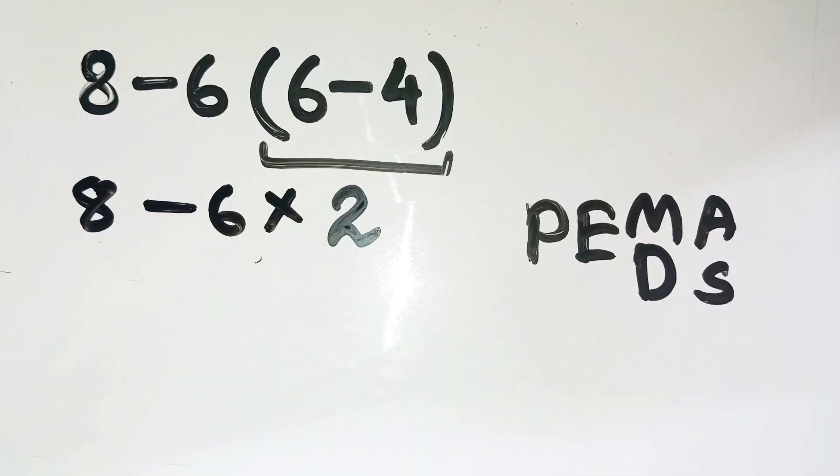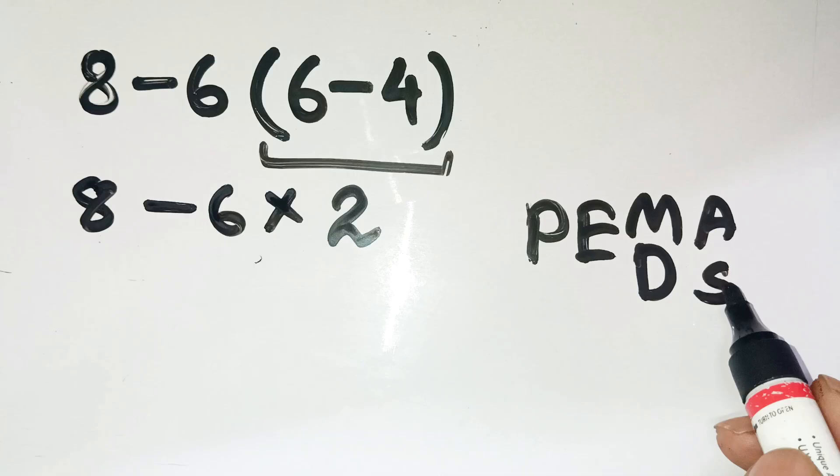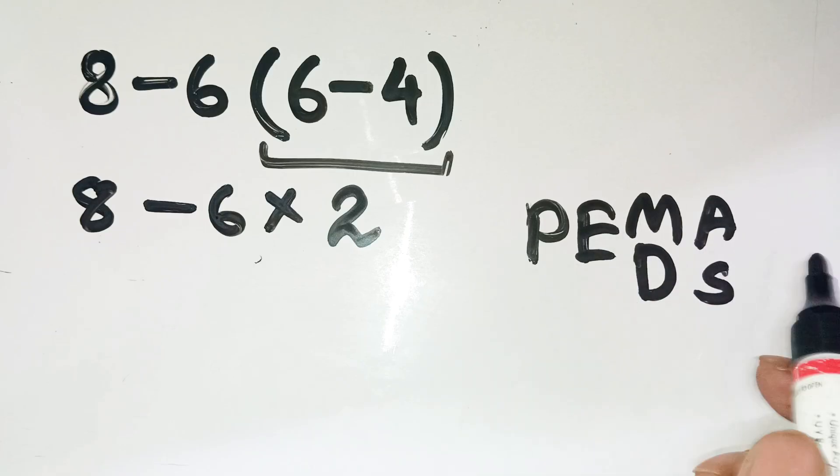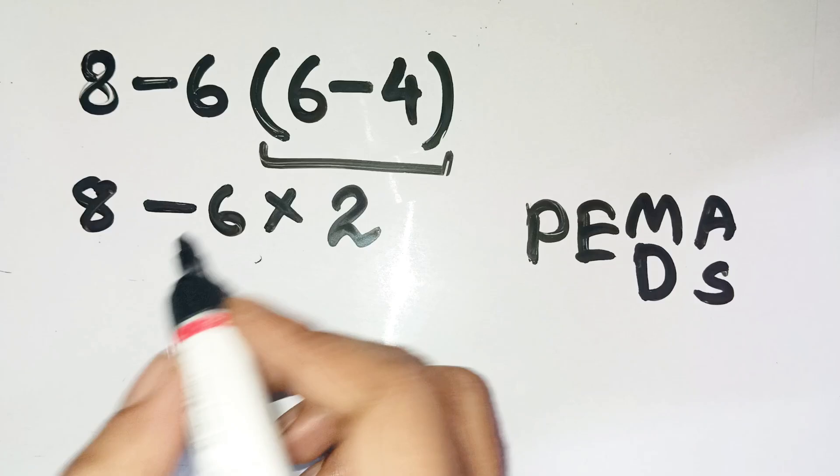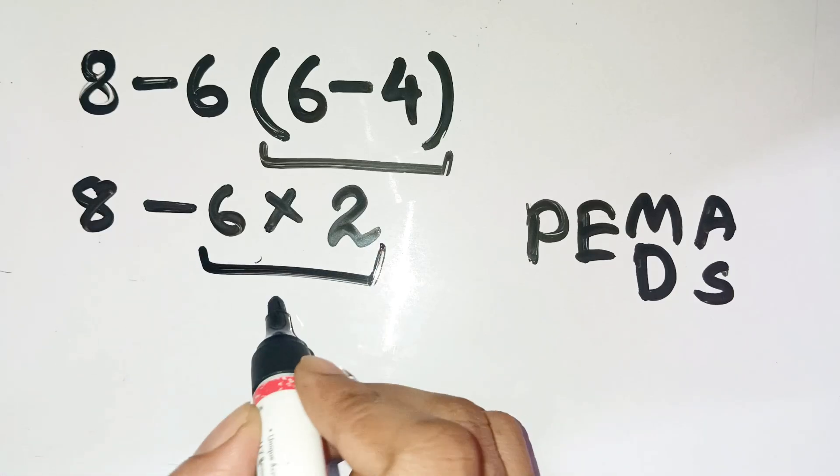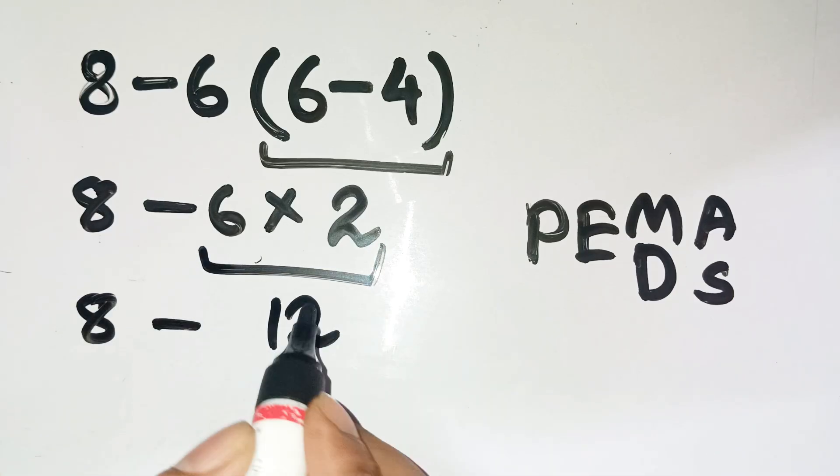Here's the part where people go wrong. PEMDAS tells us multiplication comes before subtraction. We don't just go left to right yet. We must handle that multiplication first. So we calculate six times two, which is twelve.